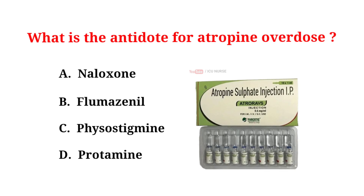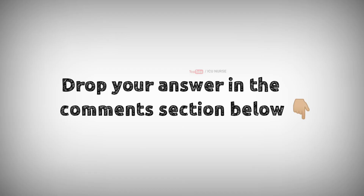What is the antidote for atropin overdose? A. Naloxone, B. Flumazenil, C. Physostigmine, D. Protamine. The correct answer is D. Protamine. Drop your answers in the comment section below.